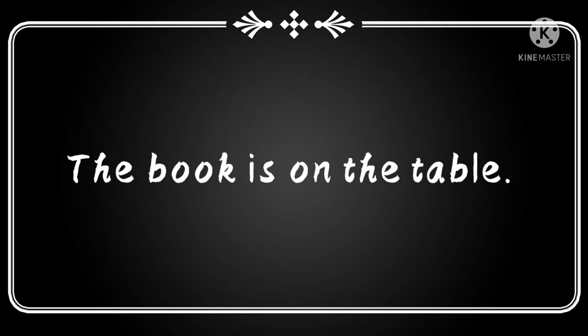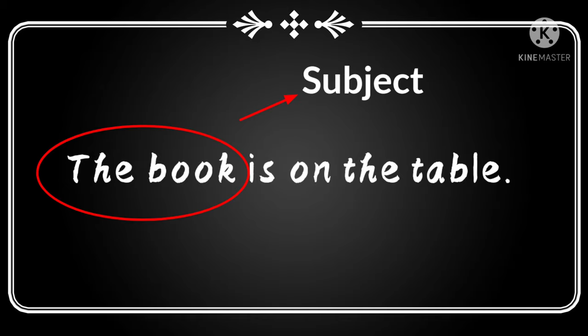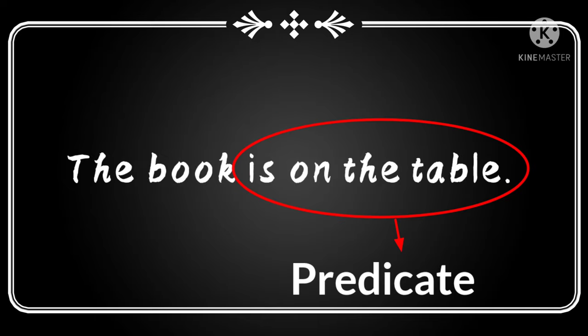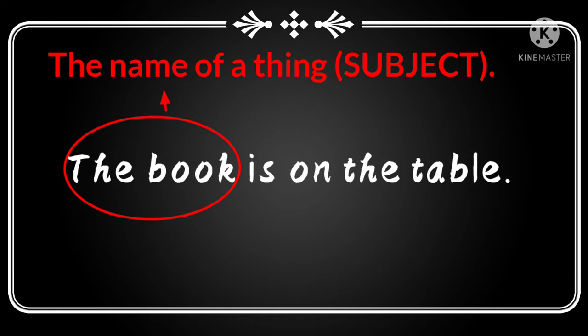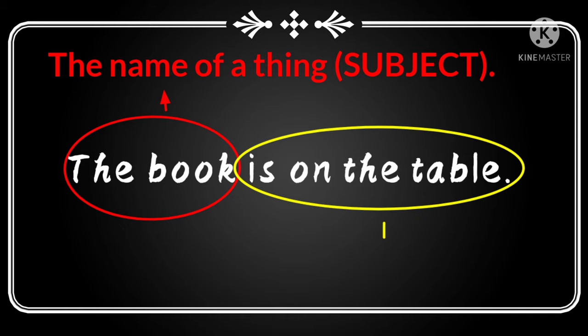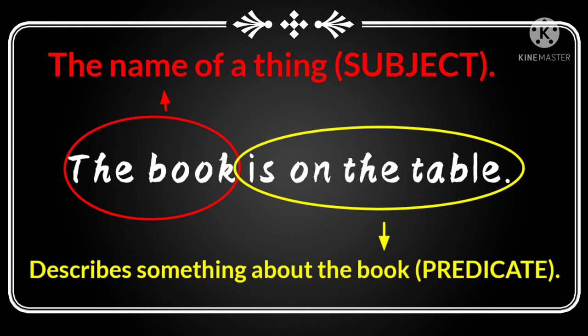For example, let us take this sentence: 'The book is on the table.' Here, 'the book' is the subject and 'is on the table' is the predicate. That means 'the book' is the name of a thing — that is the subject — and the other part 'is on the table' describes something about the book — that is the predicate.